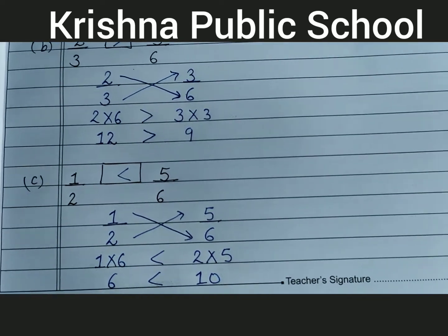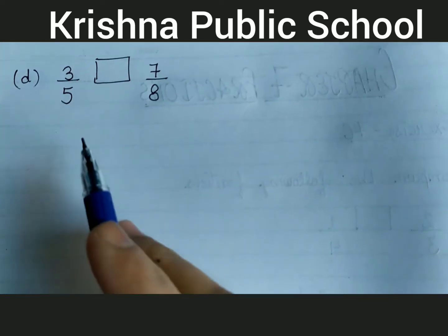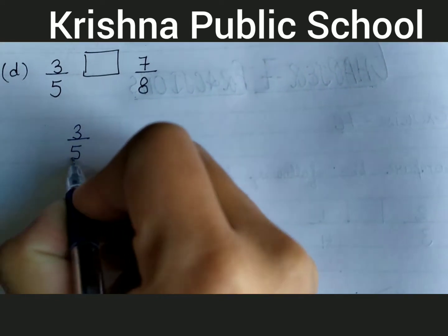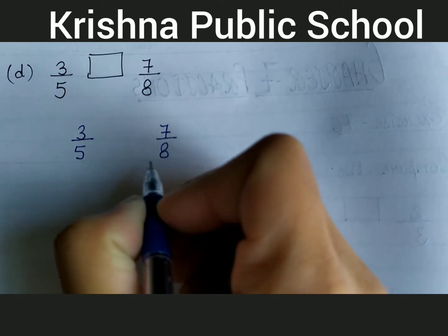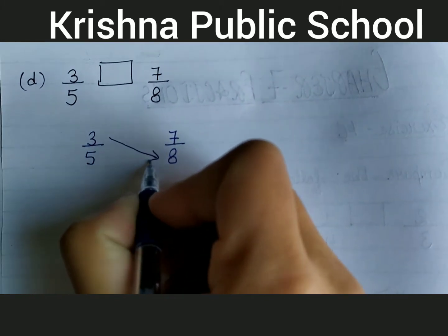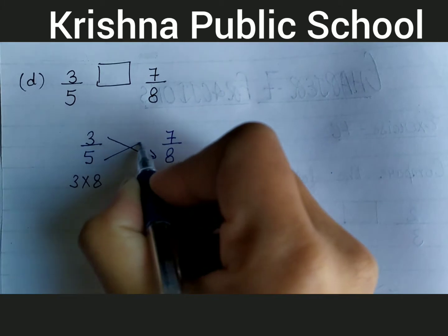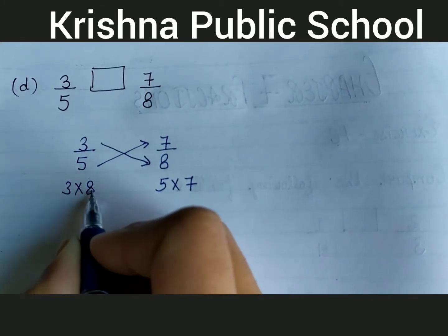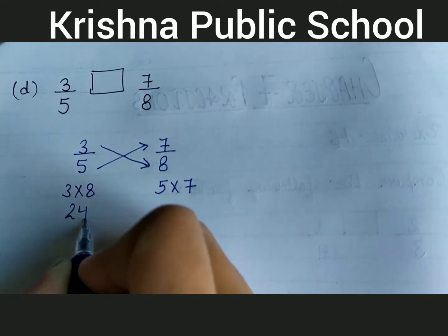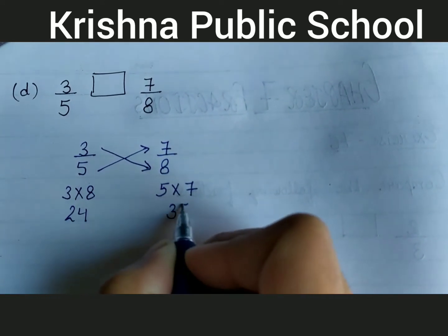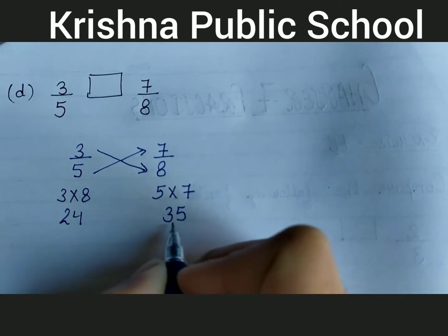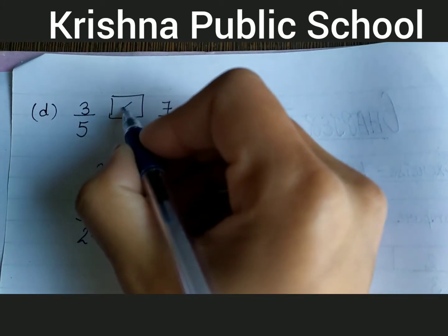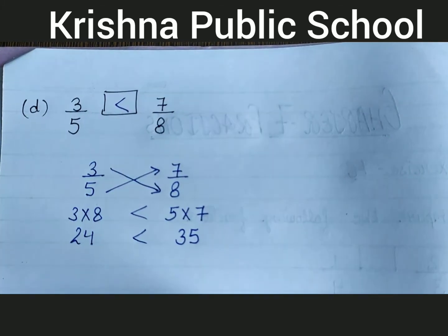This is the answer. Next question: compare 3 upon 5 and 7 upon 8. Write 3 upon 5, 7 upon 8. By cross multiplication: 3 multiply 8, 5 multiply 7. 3 multiply 8 equal to 24, 5 multiply 7 equal to 35. 35 is greater than 24, so 7 upon 8 is greater than 3 upon 5.